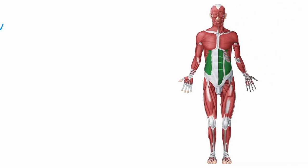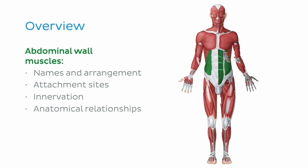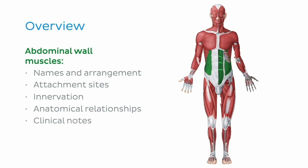Where exactly do we start? We'll begin by reviewing the names and arrangement of all the muscles of the abdominal wall. Next, we'll take a look at the attachment sites and innervation patterns for each muscle. As we venture through this tutorial, we will gain an understanding of the anatomical relationships between the muscles of the abdominal wall. Finally, we will finish off with a look at clinical notes surrounding this group of muscles to help consolidate our knowledge.